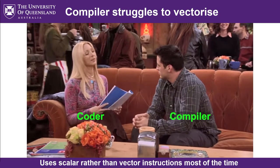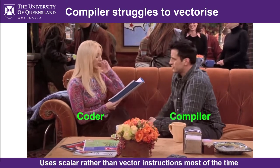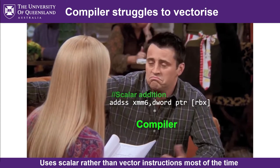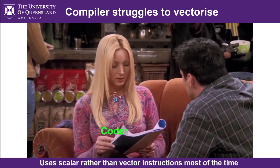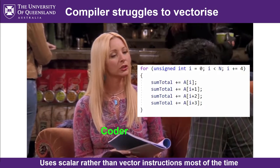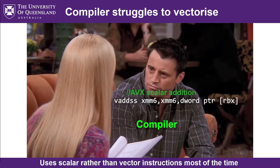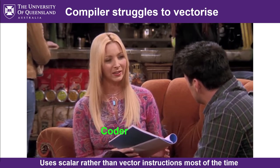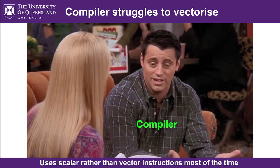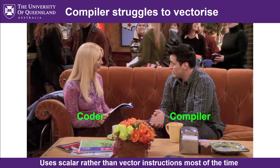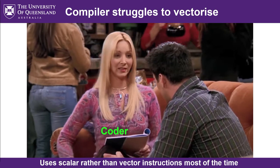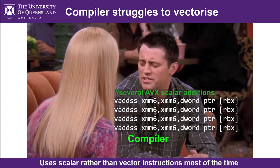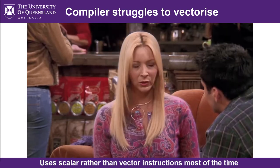In a humorous aside illustrating the compiler's limitations: the instructor walks through a simple for-loop sum, an unrolled for-loop sum, and an unrolled for-loop with separated memory — each time, the compiler still just produces scalar addition instructions rather than AVX vector instructions. The joke is that no matter how you hint to the compiler, it keeps producing scalar code.